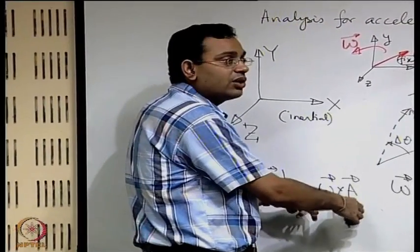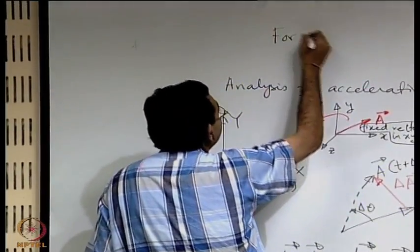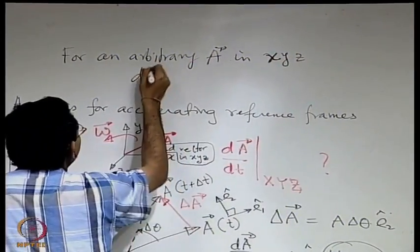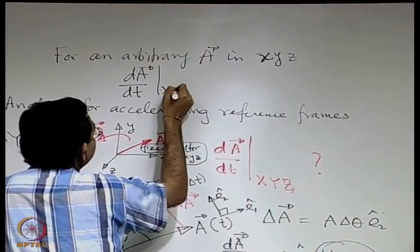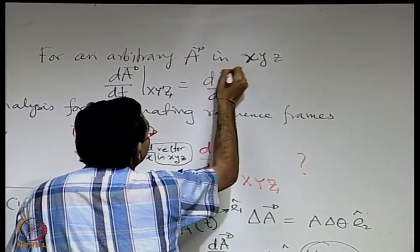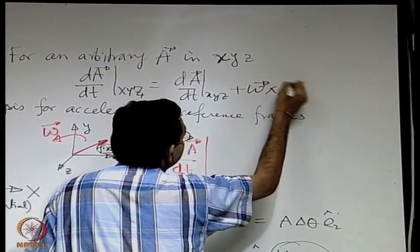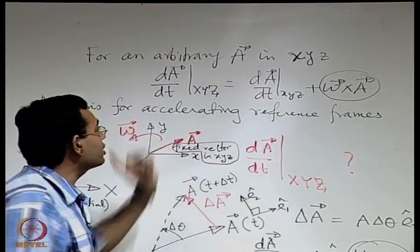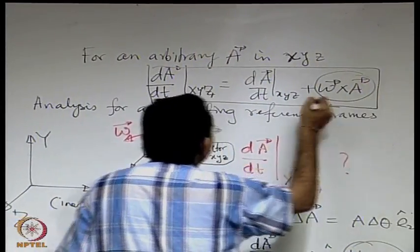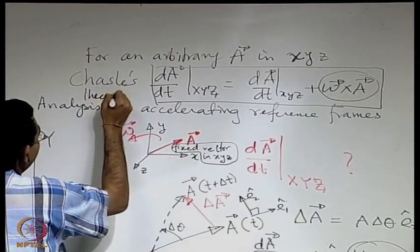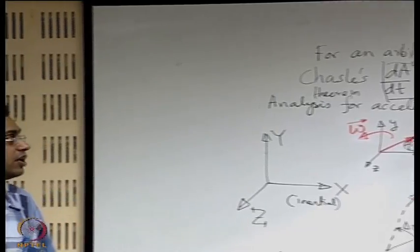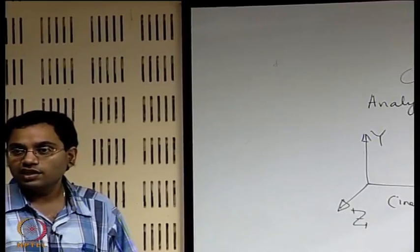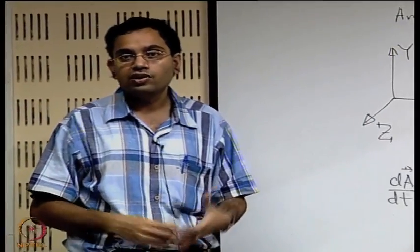In general, for an arbitrary vector a that may also be moving within the small x, y, z frame, the full relationship is: (da/dt)_XYZ = (da/dt)_xyz + omega cross a. This is known as Chasles' theorem. We will take this up and write the equation of linear momentum conservation for a control volume having arbitrary motion — linear, angular, accelerating, or non-accelerating reference frames. We will address that in the next class. Thank you.